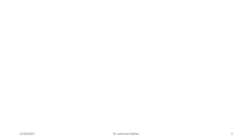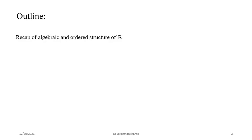Coming to the outline of today's lecture: first I will talk about a recap of the order property and algebraic property — by default algebraic property comes along with order property because they are very much compatible. We will discuss in detail about the absolute value of a real number and its applications to inequalities, and one important concept today: we will define epsilon neighborhood.